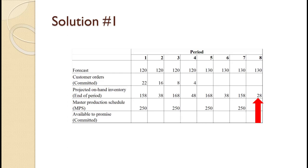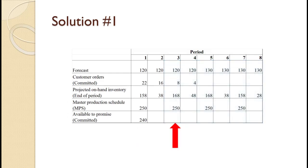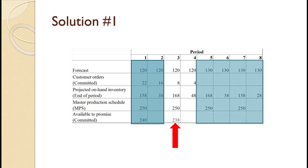We are now ready to calculate Available to Promise. To compute Available to Promise for period 1, you only look at the periods up to but not including the next scheduled production. We have 28 beginning inventory plus production of 250 for a total of 278. Of these, 22 plus 16 equals 38 are committed, so 278 minus 38 equals 240 are Available to Promise. Since we have production scheduled again in period 3, we calculate Available to Promise again in period 3. We ignore the periods used to calculate the first Available to Promise, and also ignore all the periods beginning with the next scheduled production. We have production of 250 and 8 plus 4 equals 12 committed orders, yielding 250 minus 12 equals 238 Available to Promise.